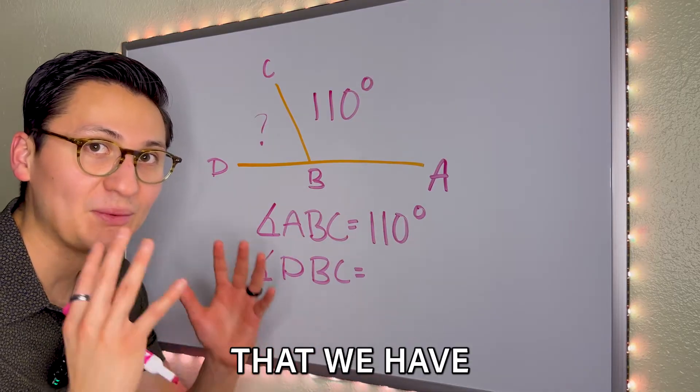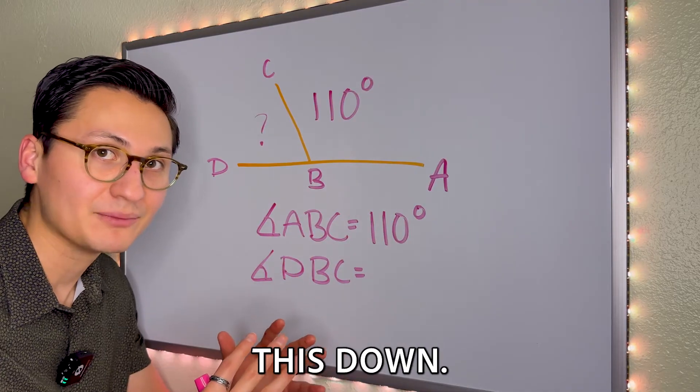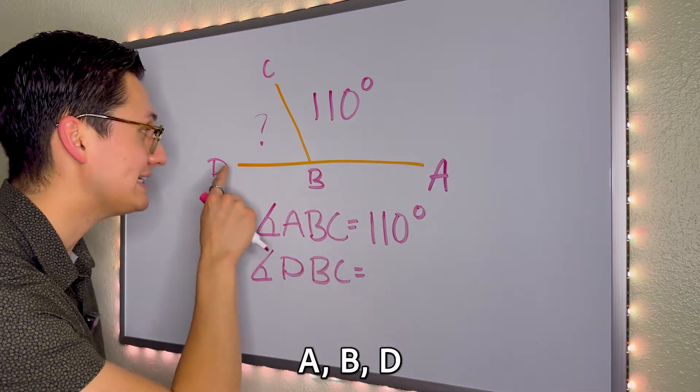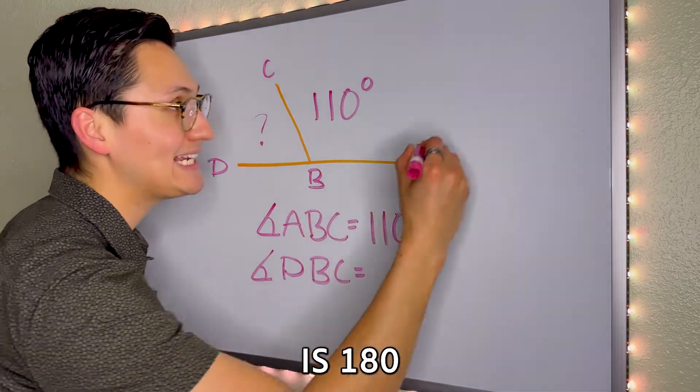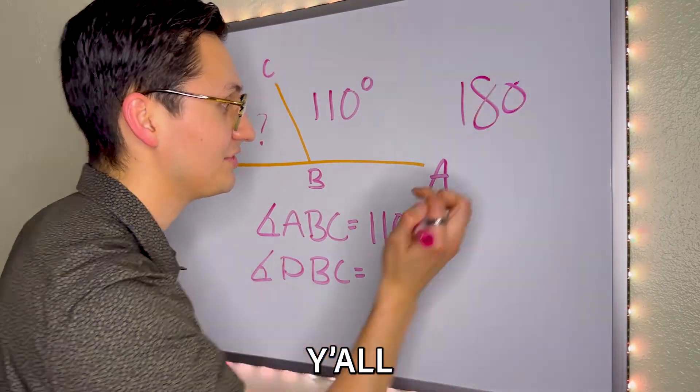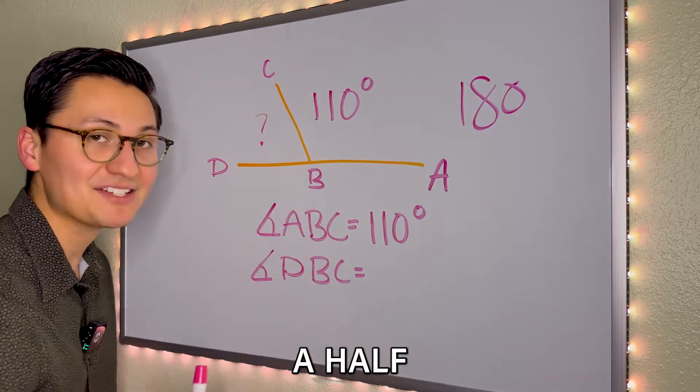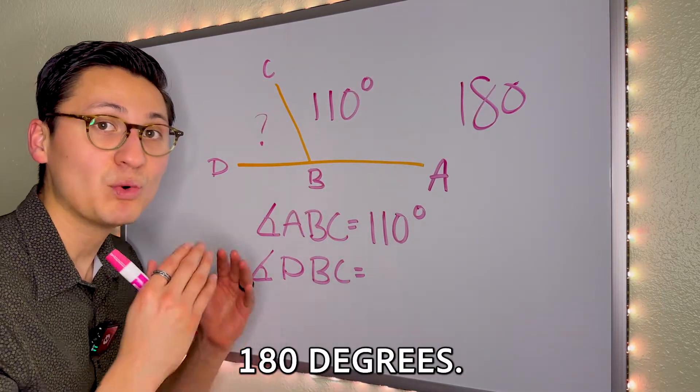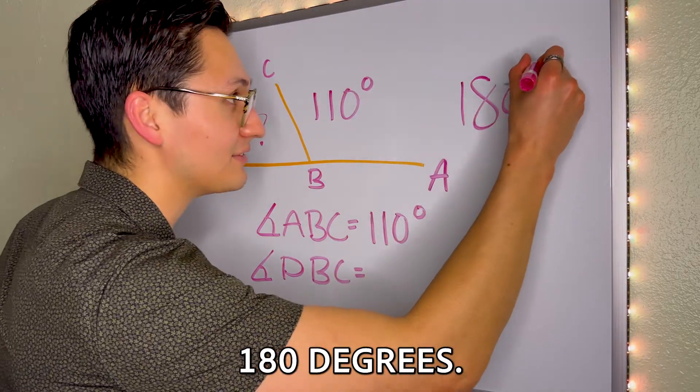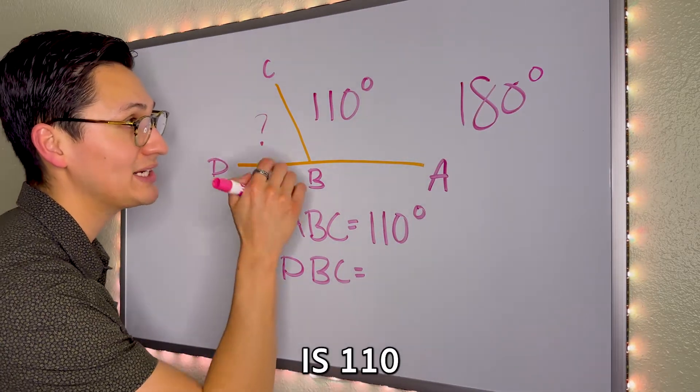Now let's use the knowledge of angles that we have and break this down. We know that angle A, B, D is 180 degrees. Y'all see that? It's a full angle. It's a half circle. It's 180 degrees.